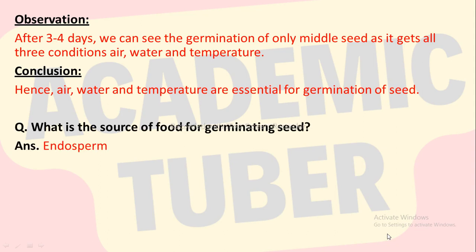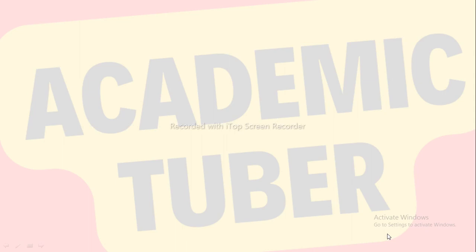Here is one question: what is the source of food for a germinating seed? The answer is endosperm. Endosperm is the source of food for a germinating seed.